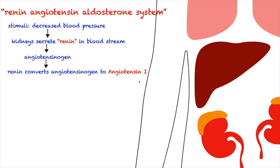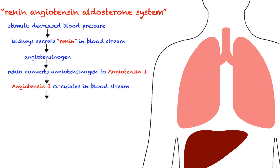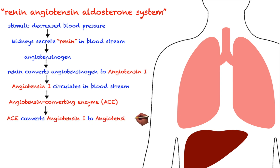Angiotensin-1 itself cannot increase the blood pressure. It needs to be converted to angiotensin-2. So what it does is that it just circulates within the bloodstream until it reaches the lungs. Within the capillaries of the lungs are enzymes called angiotensin-converting enzyme, or ACE. By its name — converting — ACE actually converts angiotensin-1 to angiotensin-2.